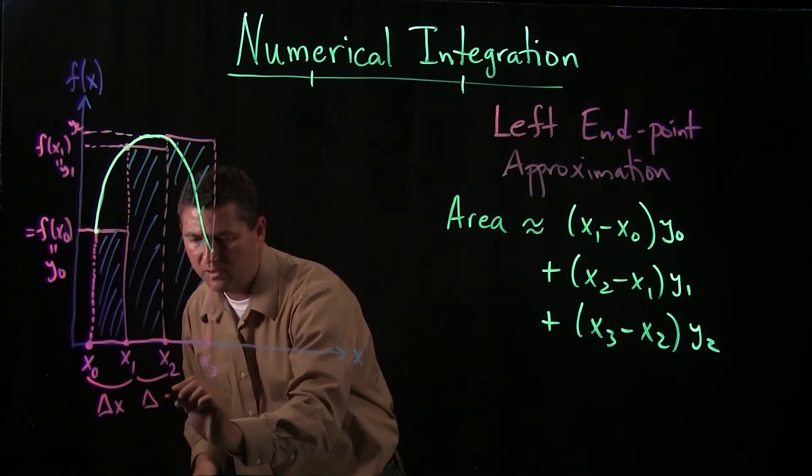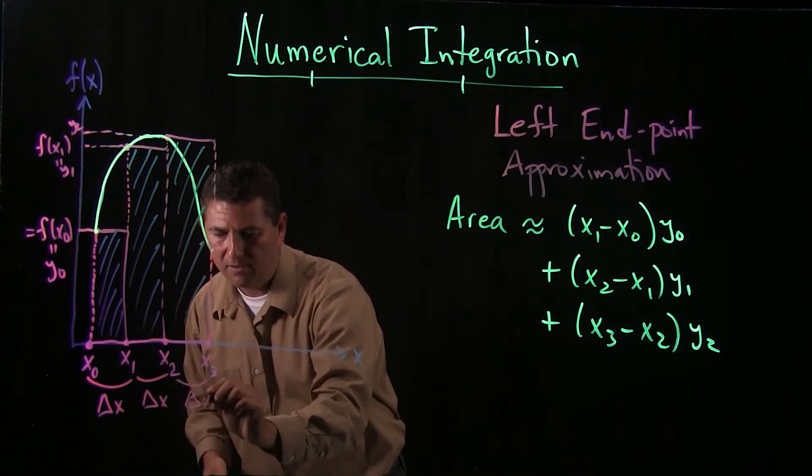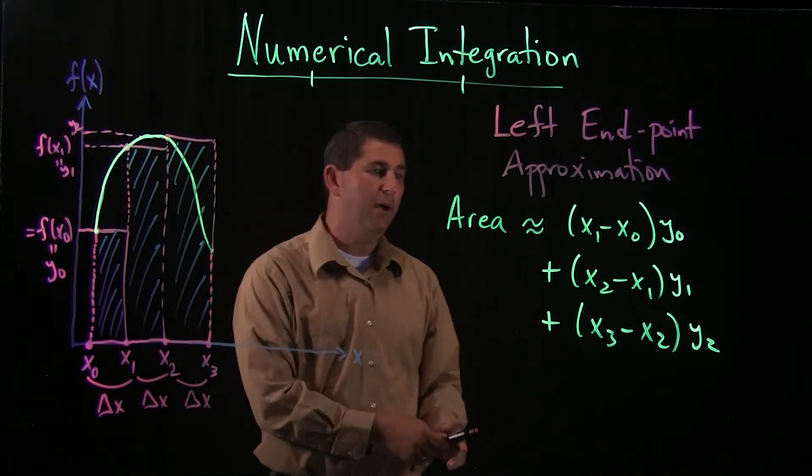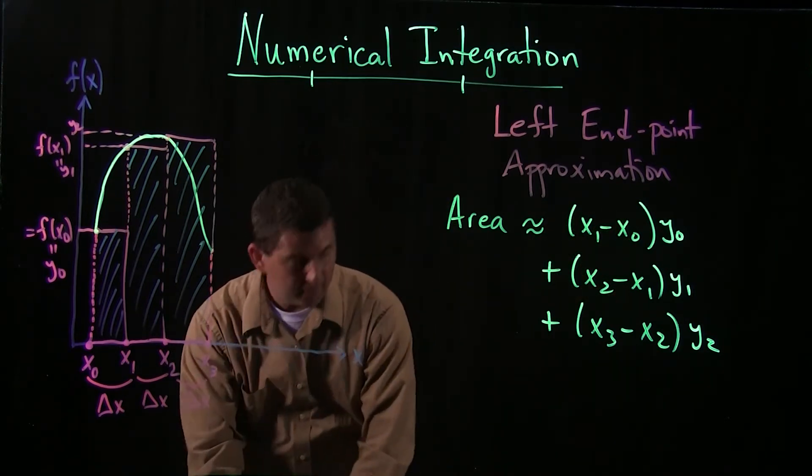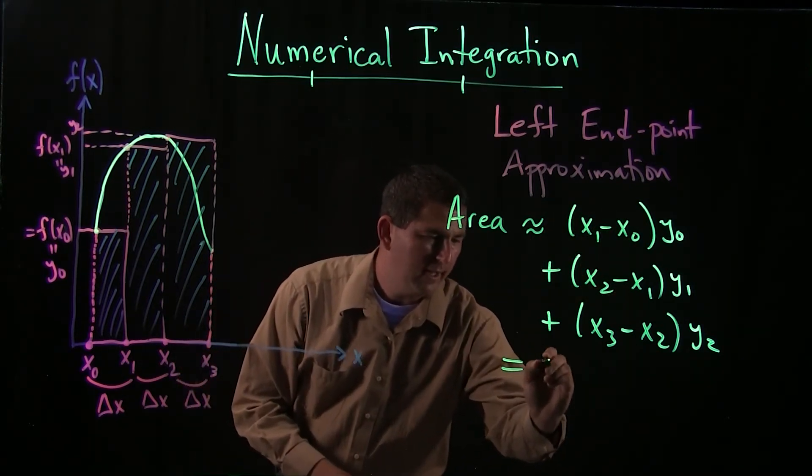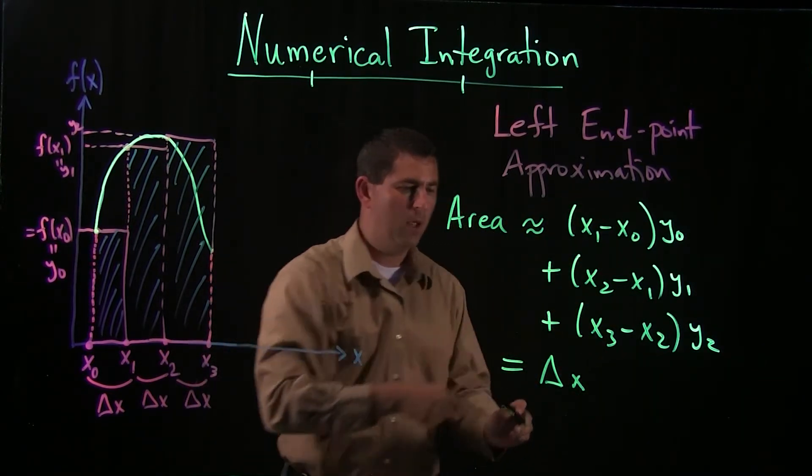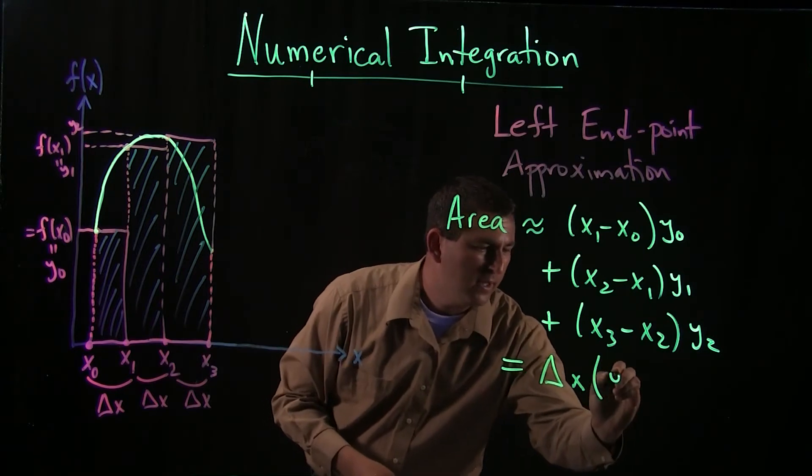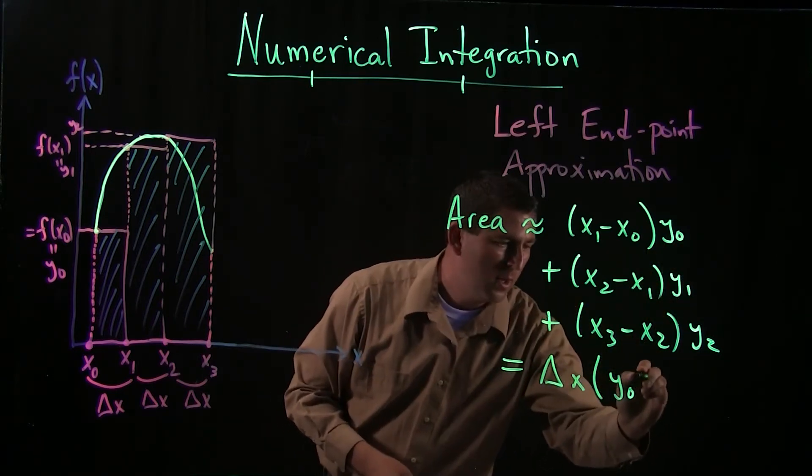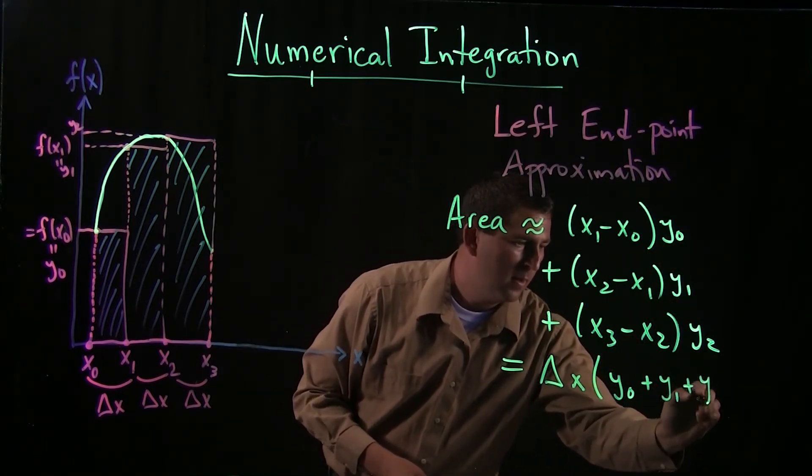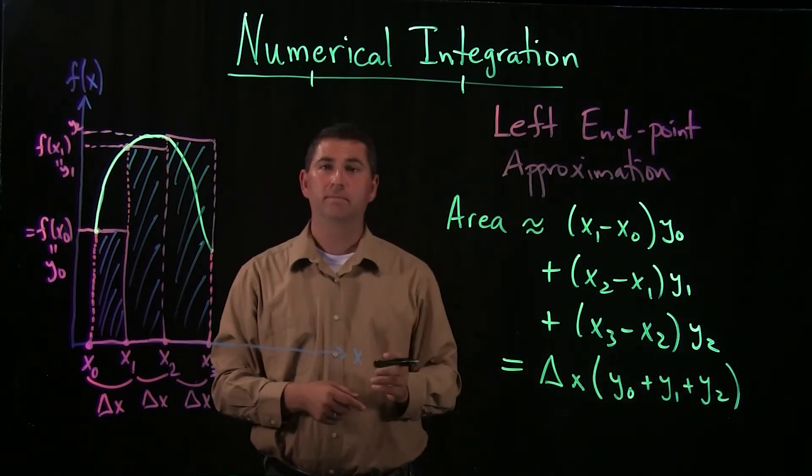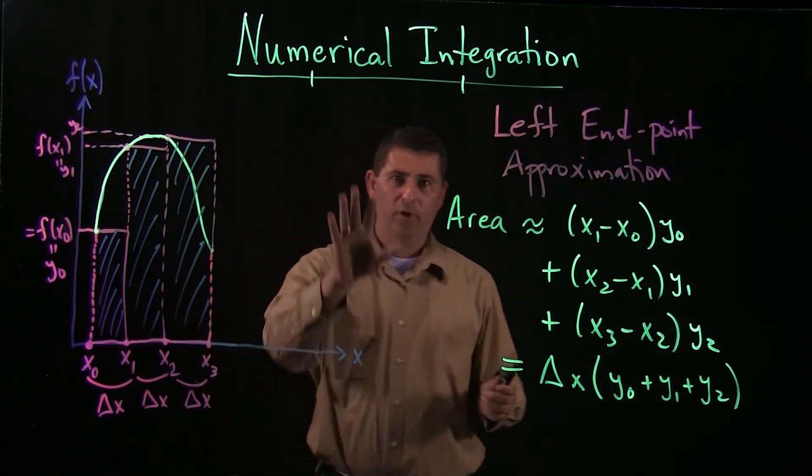So all of these we're going to assume are delta x, which means over here I can rewrite this. I can just factor the delta x out. So these are now all the same. And then all I have to do is add up y0 plus y1 plus y2. So this gives me pretty nice formula.